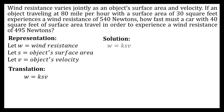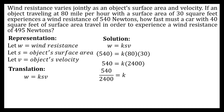Substituting the first set of given values: 540 is equal to the constant of variation times 80 times 30. Multiplying 30 and 80 gives 2400. Dividing both sides by 2400, we get 540 over 2400. Simplifying that gives us our constant of variation.